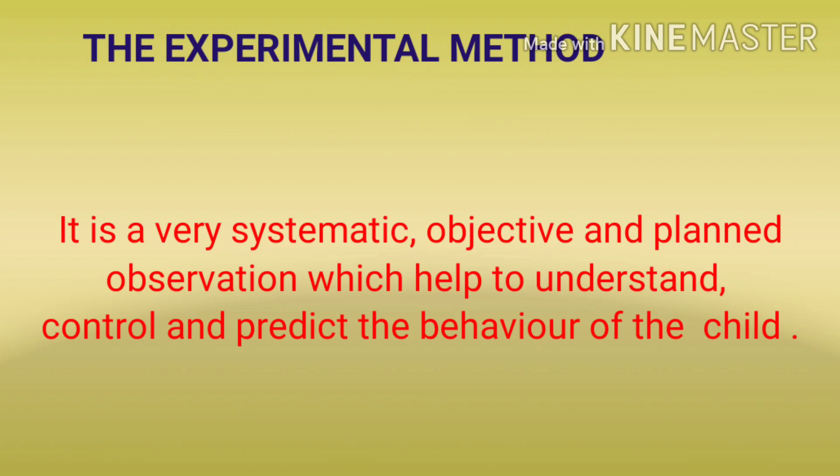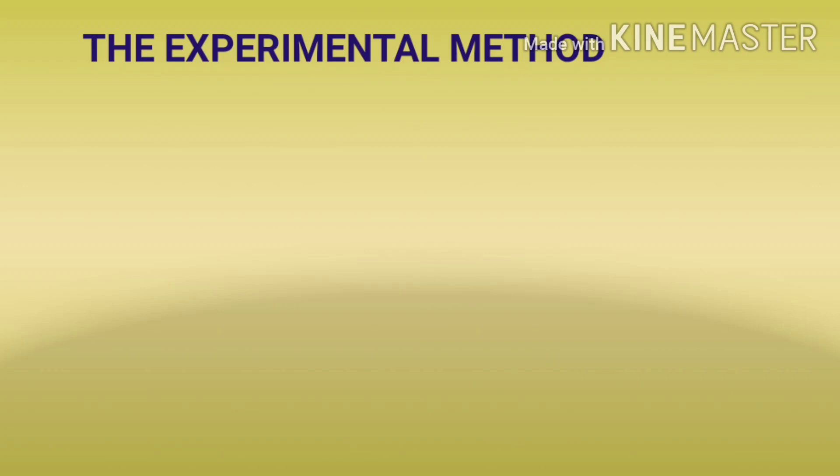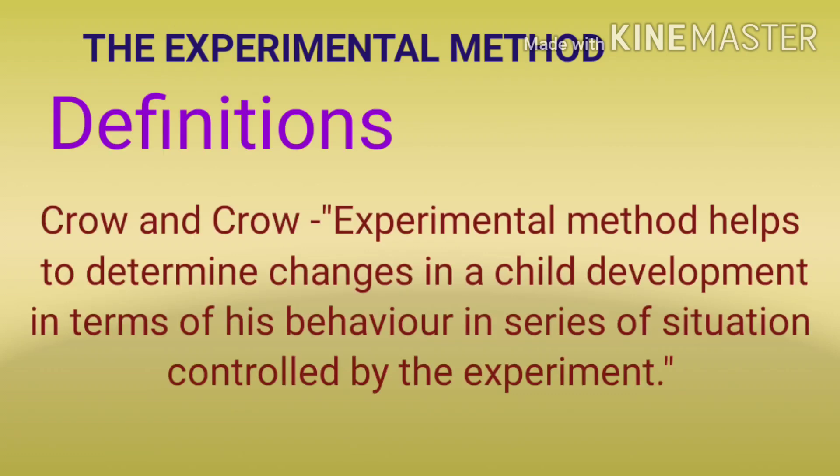Now, definitions of experimental method. We will see some definitions of experimental method. First, we will take the definition of Crow and Crow: 'Experimental method helps to determine changes in a child's development in terms of its behavior in a series of situations controlled by the experiment.' That is the definition of Crow and Crow.